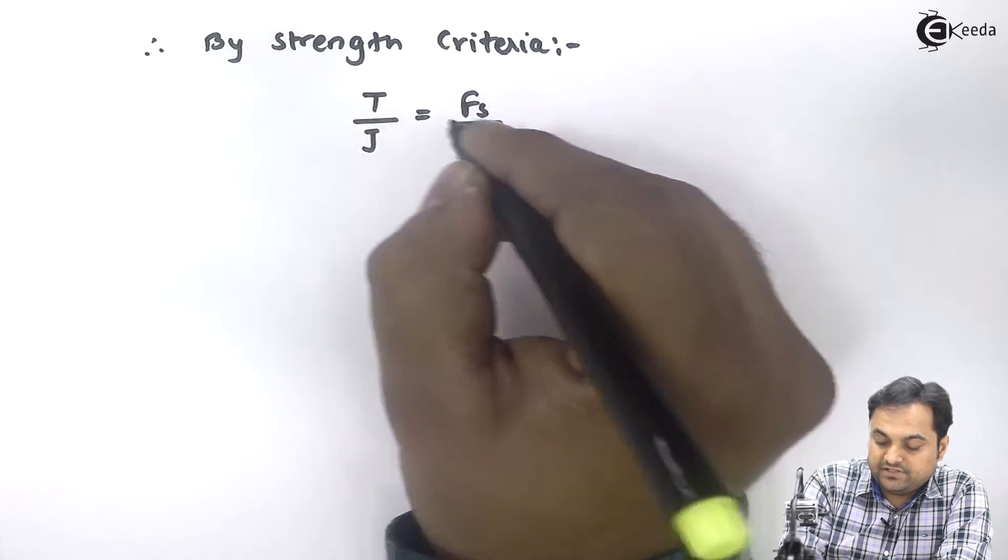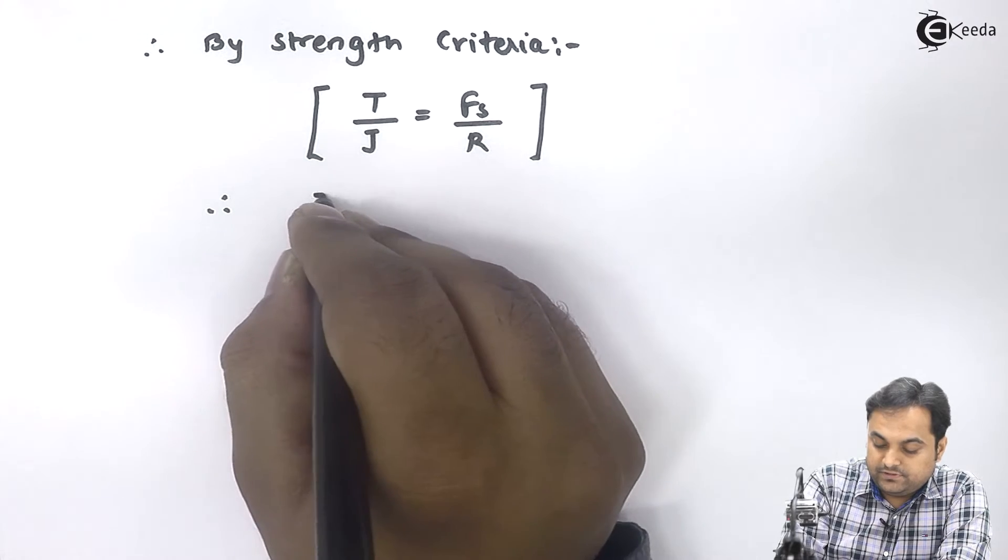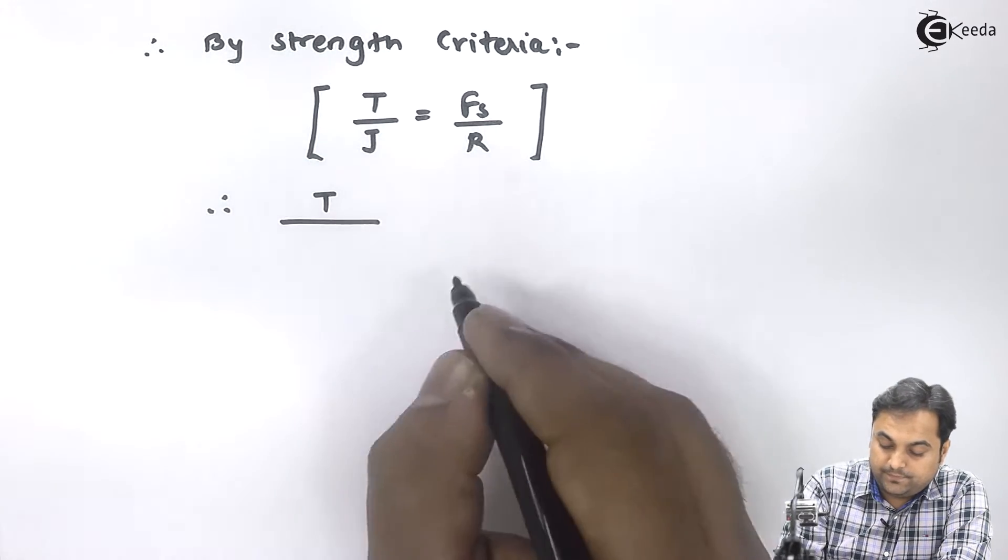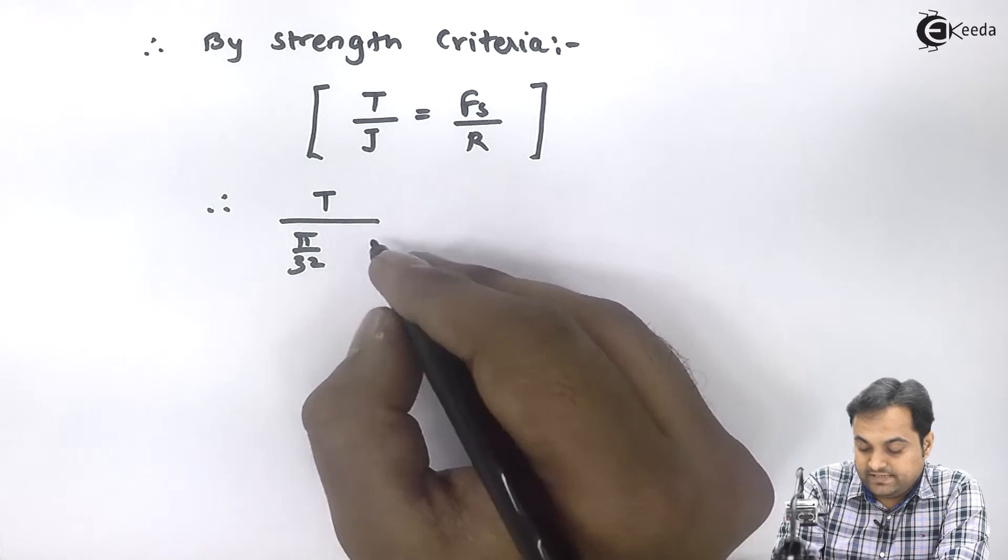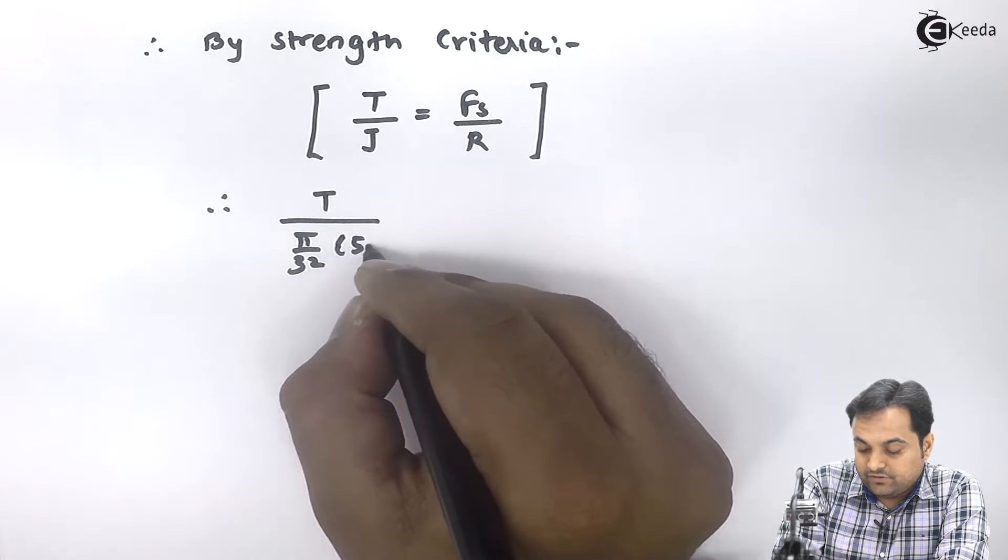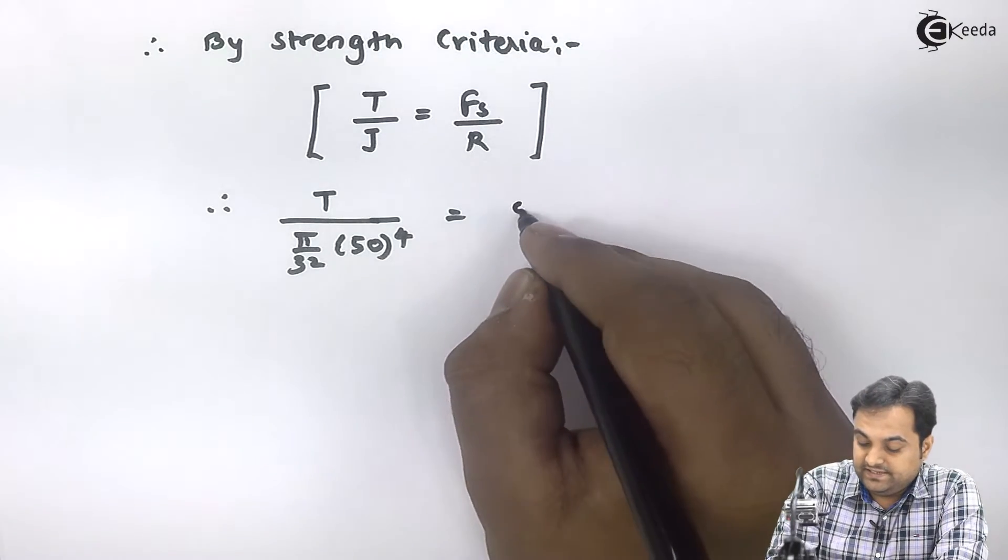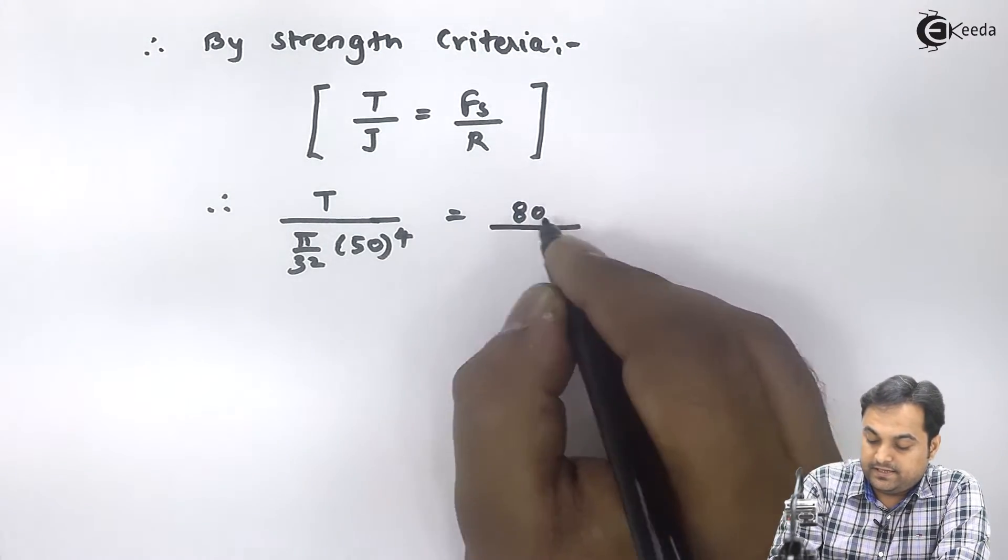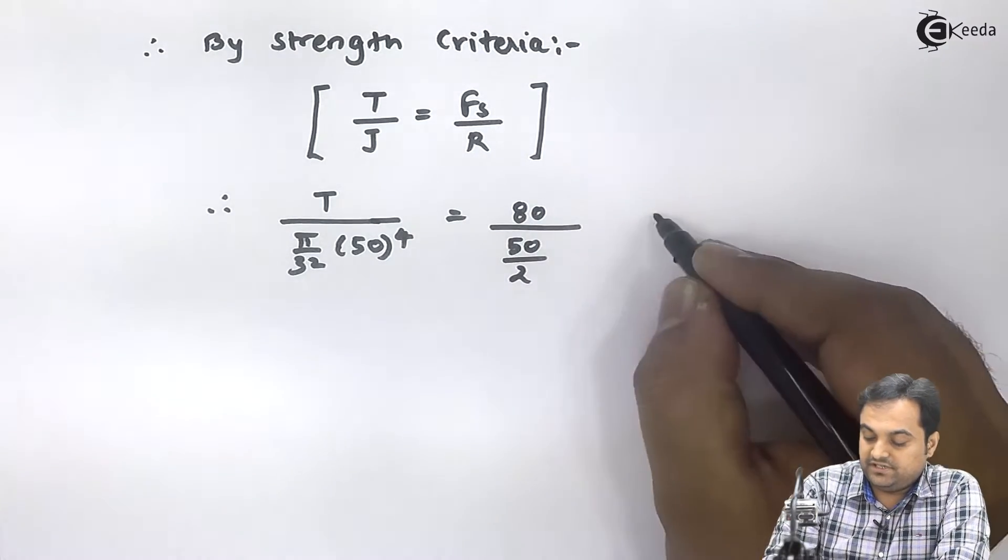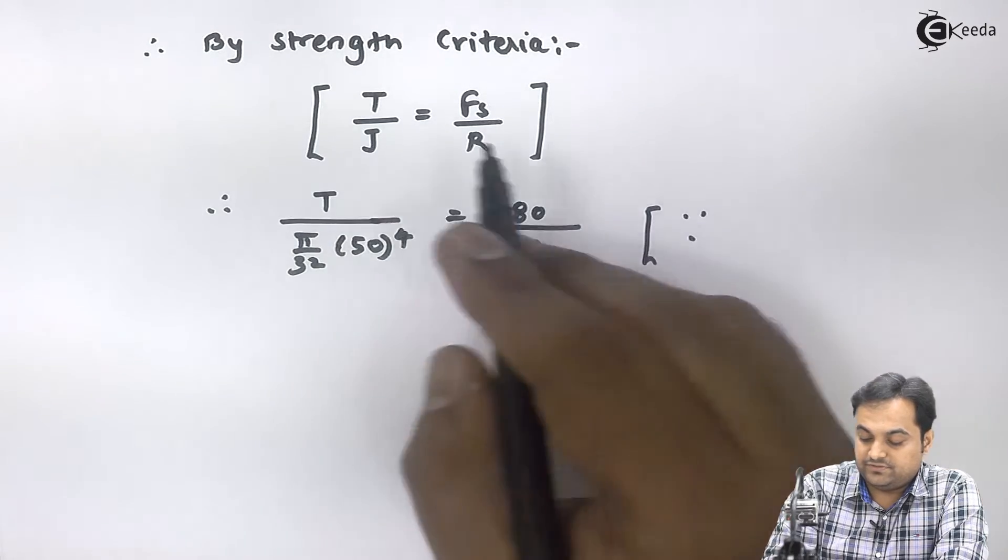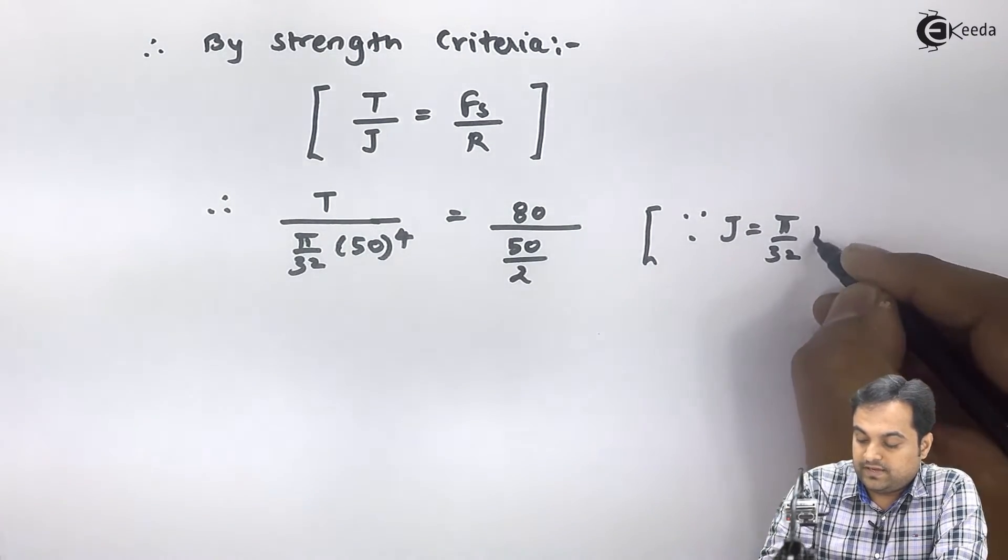I am using this criteria because FS is given. Therefore, T/J where J = π/32 × D⁴, and diameter is 50, so 50⁴, equals FS = 80 divided by radius R = diameter/2 = 50/2. Since J = π/32 × D⁴...